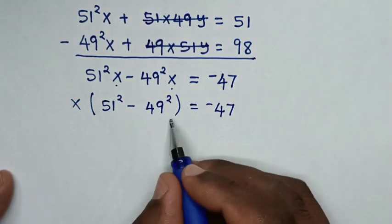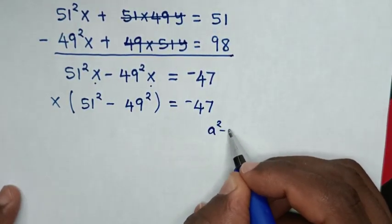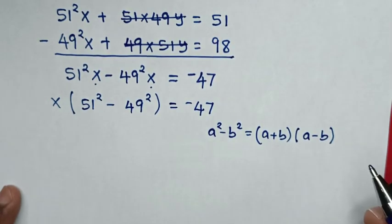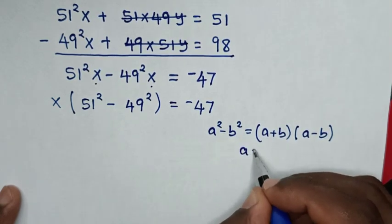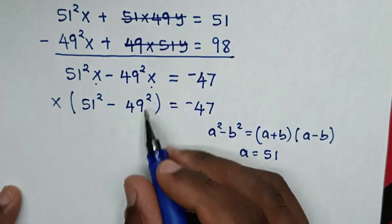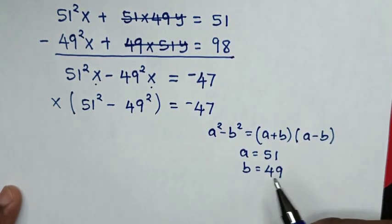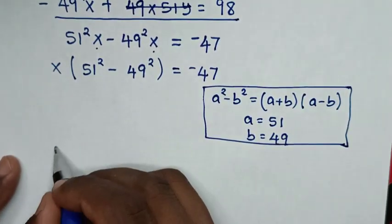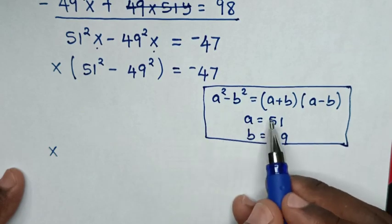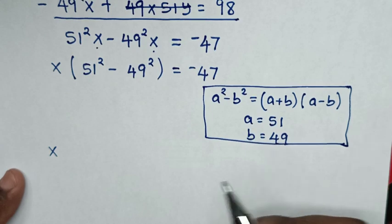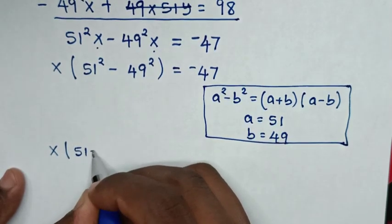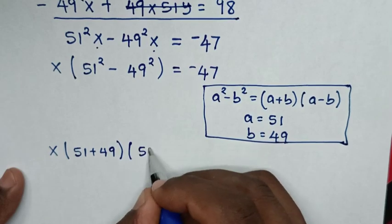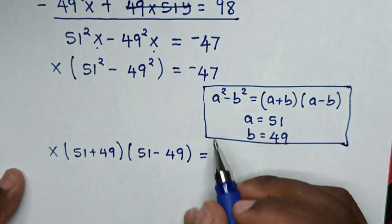Now, this part is a perfect square difference, so we apply the rule a squared minus b squared equals (a plus b)(a minus b). Comparing with 51 squared and 49 squared, a equals 51 and b equals 49. So our equation becomes x times (51 plus 49) times (51 minus 49) is equal to negative 47.